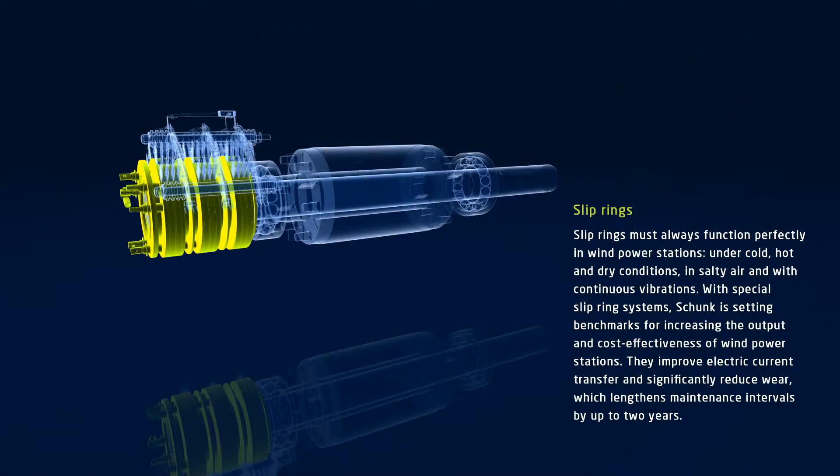Wind power stations are supposed to produce high output at the highest possible degree of energy efficiency and cost effectiveness. For this reason, slip rings must always function perfectly, even in difficult conditions. Jarring cold, high temperatures, extreme dryness, salty air, and continuous vibrations must not be allowed to limit performance.